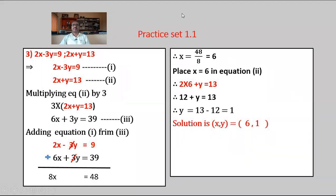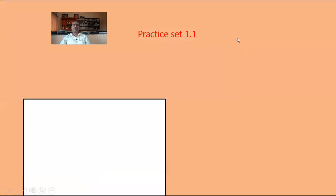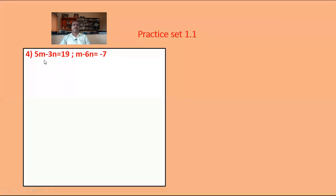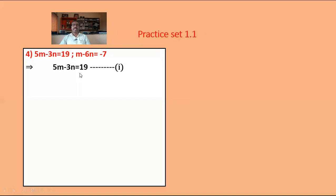Problem number 4: 5m minus 3n is equal to 19 — equation number 1; m minus 6n is equal to minus 7 — equation number 2.